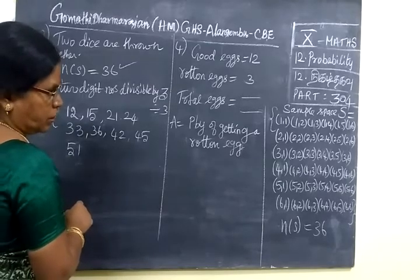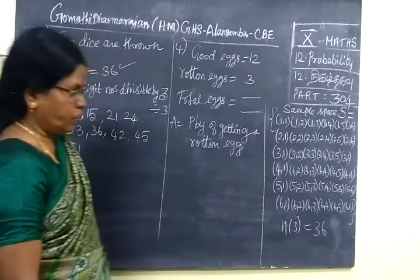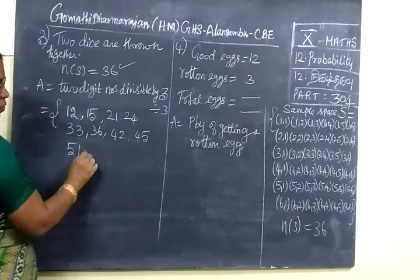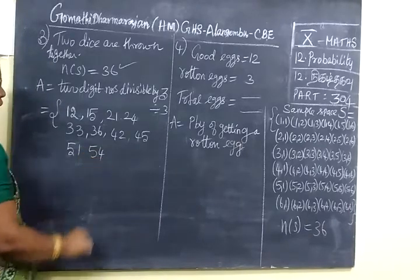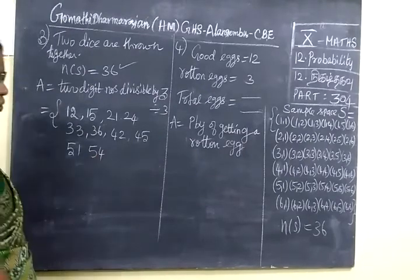Then 54. 54 will come because if you take 3 tables, one time balance to 24. So 8 threes are 24.